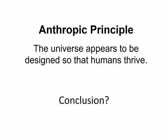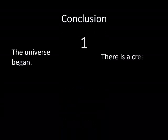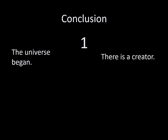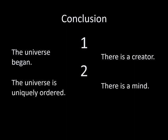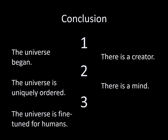So, what is our conclusion? The best explanation which we can infer from the observable universe and the principles by which it works is that the universe began. Therefore, there is a creative cause. The universe is uniquely ordered. Therefore, there is a mind behind it. And the universe is amazingly fine-tuned for us to be here. Therefore, there is a God.